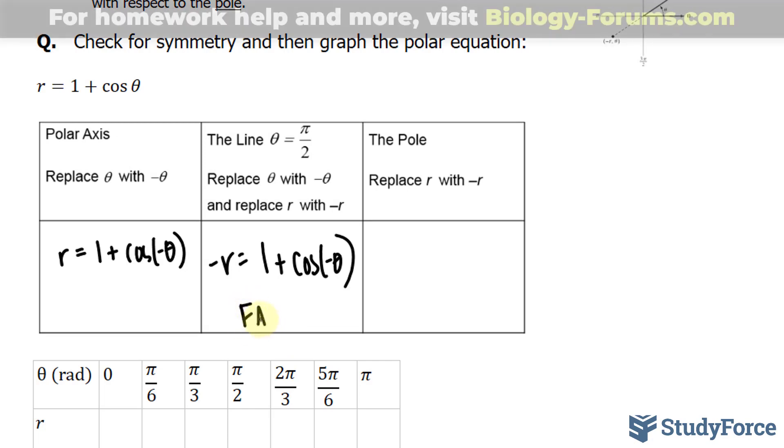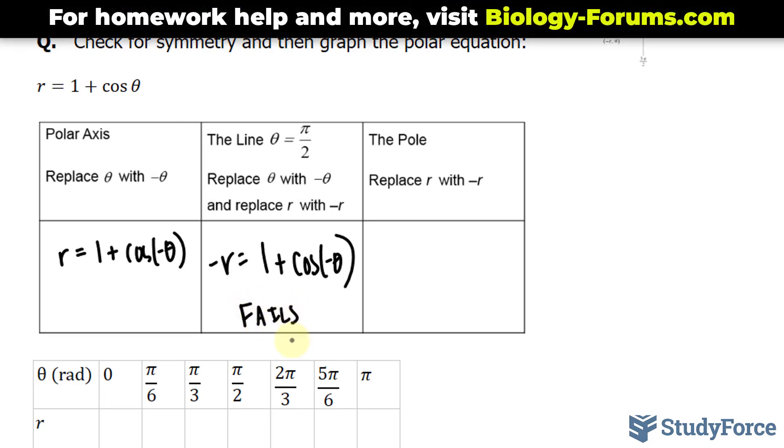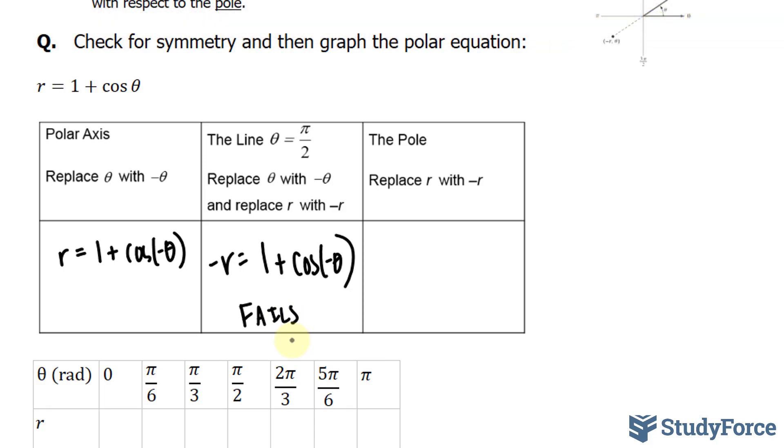Therefore, the test here fails, and the graph is not symmetrical with respect to the line theta equals pi over 2.